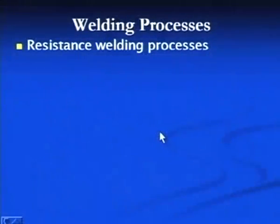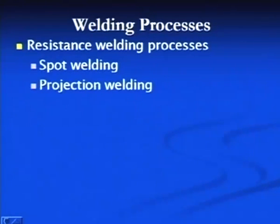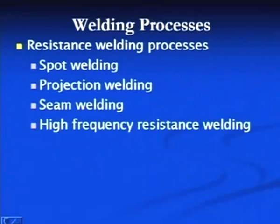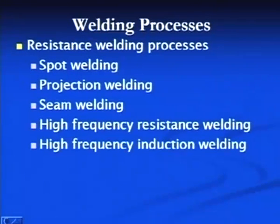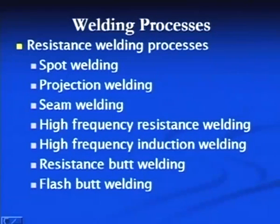In resistance welding processes, the joint is produced by heat generated due to the flow of current. Welding processes in this category include spot welding, projection welding, seam welding, high frequency resistance welding, high frequency induction welding, resistance butt welding, flash butt welding, and stud welding.